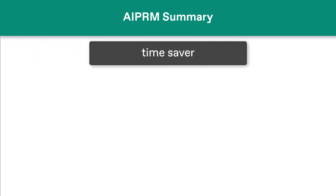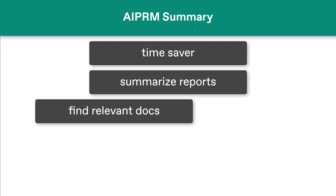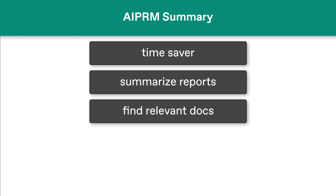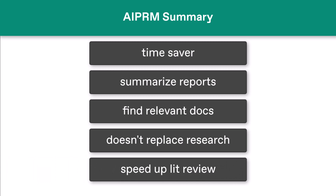Here's a great time-saver tool for researchers. Use AI to generate a summary of your initial reports. Read the summaries and find the documents that are most relevant to your work, and then ignore the rest. I should point out that the AI does not replace research work, but it does speed up the initial literature review.